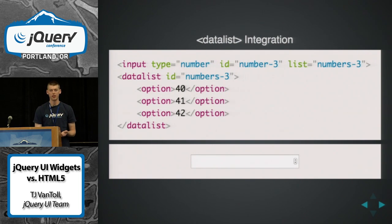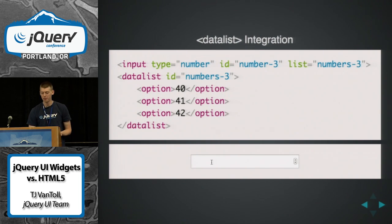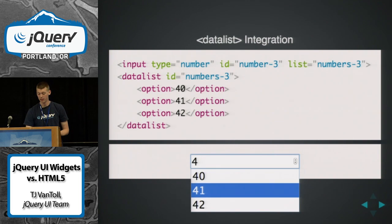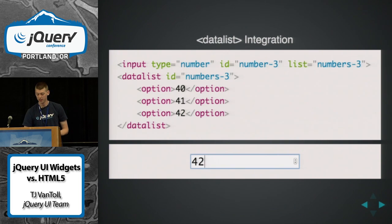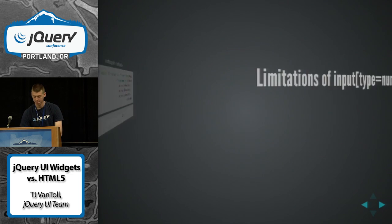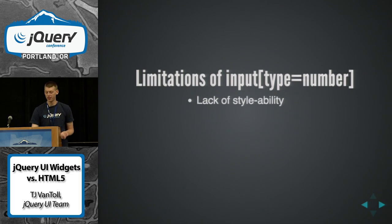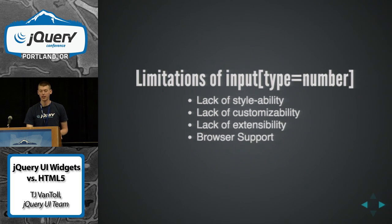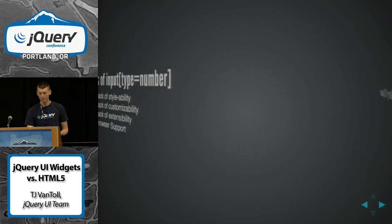You also get data list integration. The way Chrome implements this for number pickers is just kind of like a standard text box autocomplete. The limitations of the number picker are essentially the same — you're not going to be able to do a whole lot with these things, and browser support is a little better, but still not all that great.